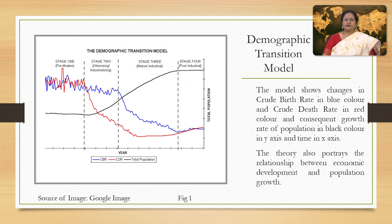Figure 1 shows the demographic transition model. The model shows changes in the crude birth rate in blue color and crude death rate in red color, and the consequent growth rate of population in black color on the Y-axis, and the passage of time on the X-axis. The theory also portrays the relationship between economic development and population growth.